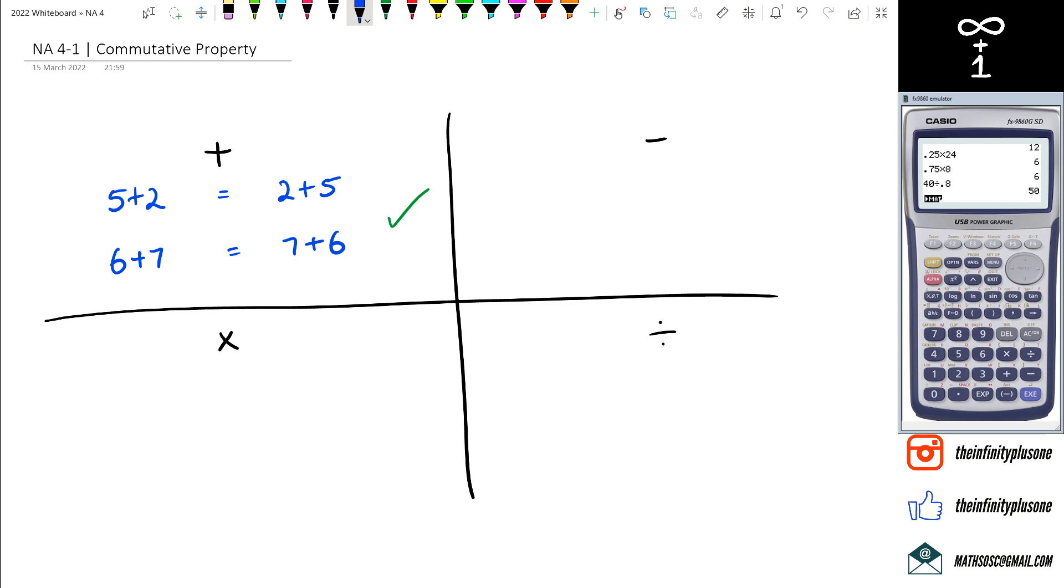What about if we do 5-2? We know that 5-2 equals 3. However, if we flip the order around, we're going to get 2-5, which actually equals negative 3. So you can actually say that there's no such thing as a commutative property for subtraction.